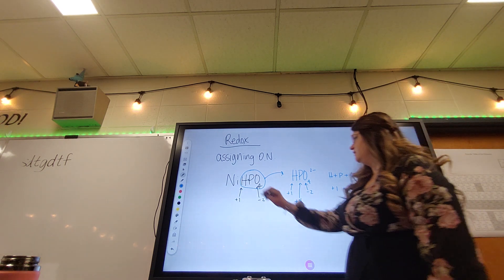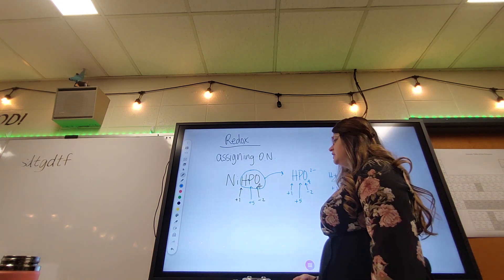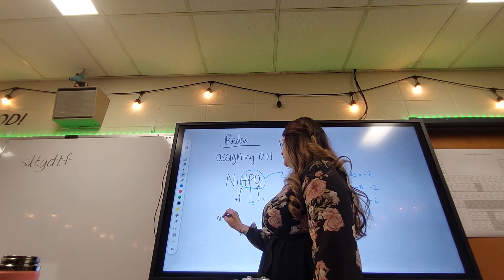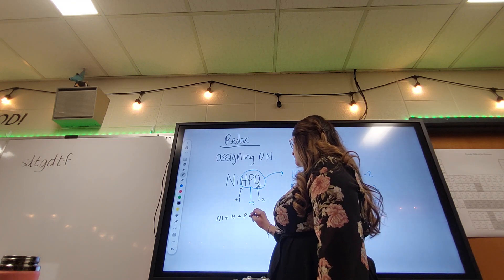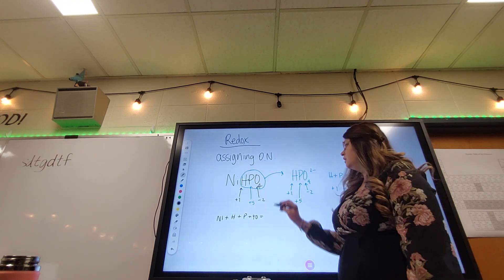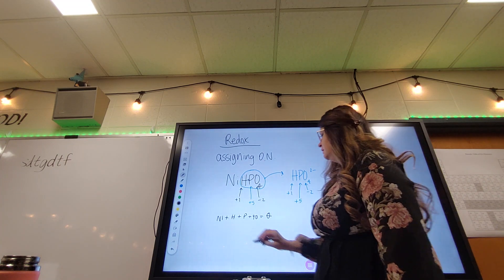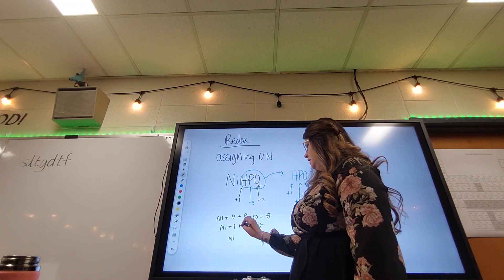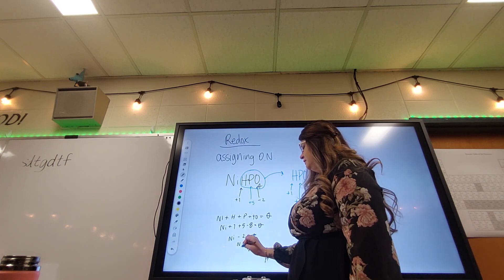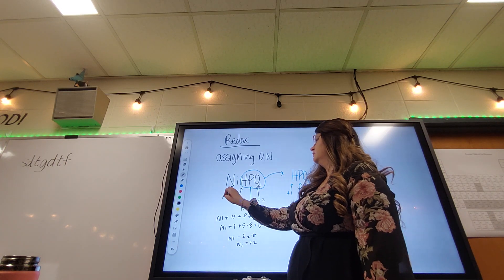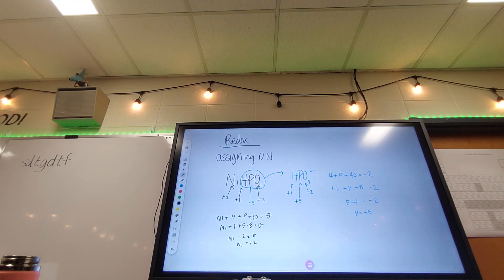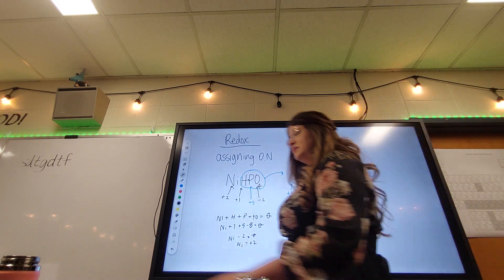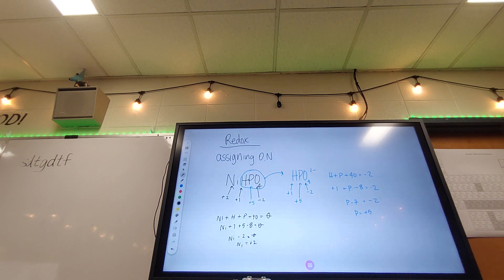Now that we know phosphorus is +5, we can put that back into the compound and do the same process to solve for nickel. We have nickel, one hydrogen, one phosphorus, four oxygens, and this time it needs to add up to zero since there's no charge on the compound. So nickel +1 +5 -8 = 0, giving nickel = +2. That's a speedy review — now we'll put this together with chemical equations to determine what's being reduced and oxidized.